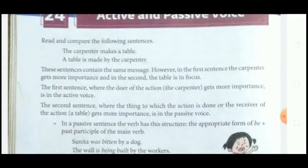The first sentence, where the doer of the action — the carpenter — gets more importance, is an active voice sentence. In the second sentence, we changed the subject to 'table,' so the sentence where the receiver of the action gets more importance is the passive voice. The carpenter was doing the action while the table was receiving the action — that is the difference between active and passive voice.